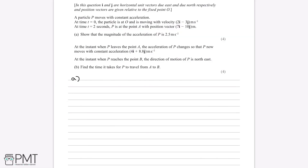A particle P moves with constant acceleration. At time t equals 0, the particle is at O and moving with velocity 2i minus 3j metres per second. At time t equals 2 seconds, P is at the point A with position vector 7i minus 10j metres. Part A wants us to show that the magnitude of the acceleration of P is 2.5 metres per second squared.